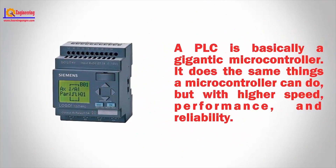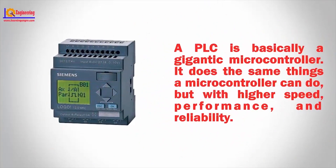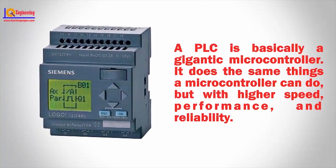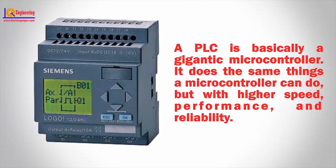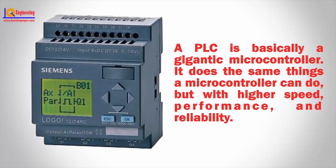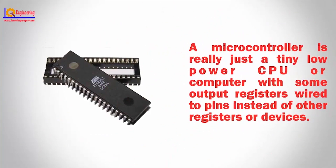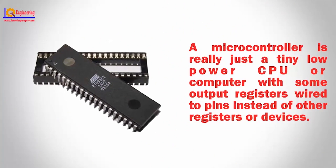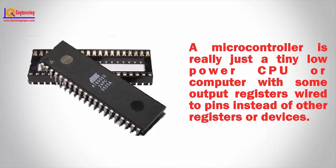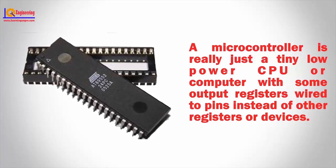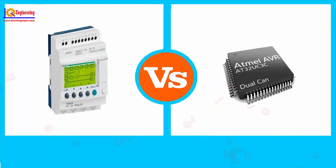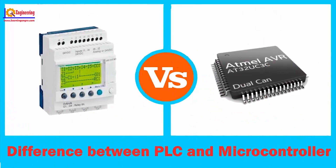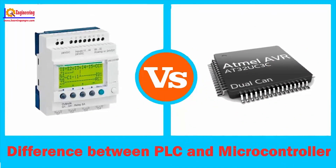A PLC is basically a gigantic microcontroller. It does the same things a microcontroller can do, but with higher speed, performance, and reliability. A microcontroller is really just a teeny low-power CPU or computer with some output registers or I/O pins instead of other registers or devices. In this video, we will show you the difference between PLC and microcontroller.